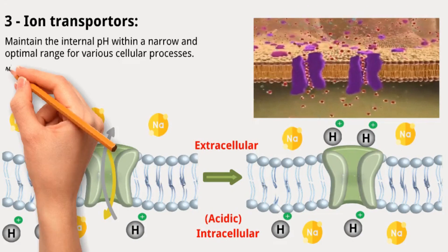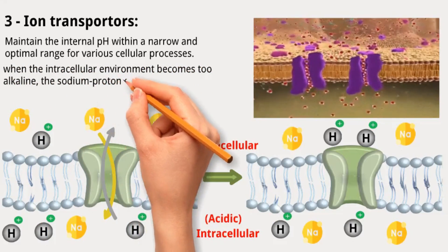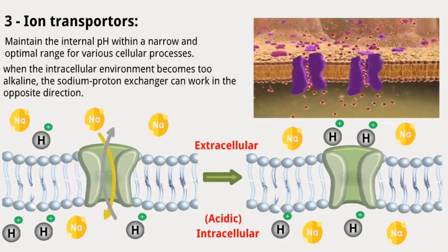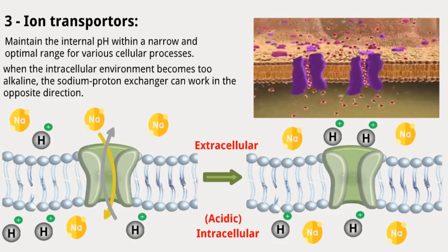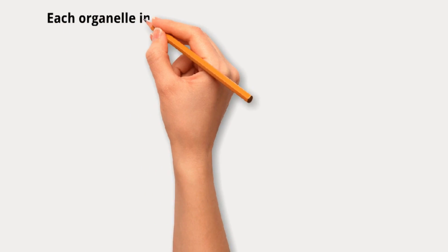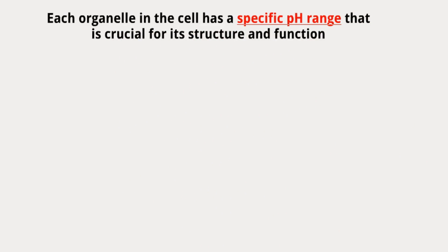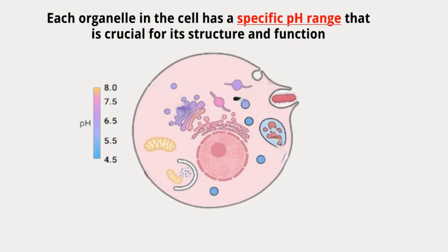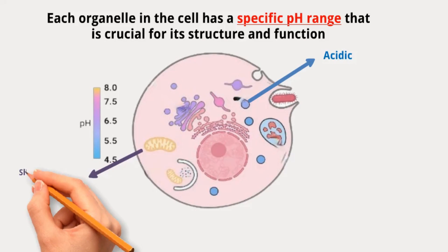Conversely, when the intracellular environment becomes too alkaline and there is a need for increased acidity, the sodium-proton exchanger works in the opposite direction: it imports protons into the cell while exporting sodium ions, helping to lower the intracellular pH. Interestingly, each organelle in the cell has a specific pH range that is crucial for its structure and function. So, inside the cell, we have different compartments with different pH values — for example, lysosomes are acidic, while mitochondria are slightly alkaline.